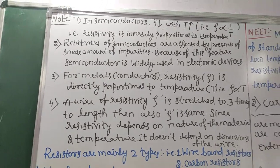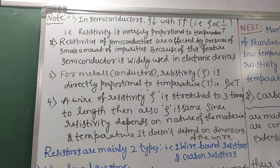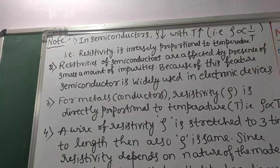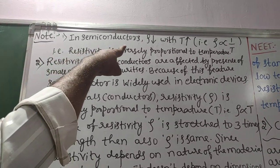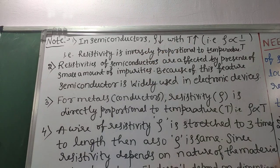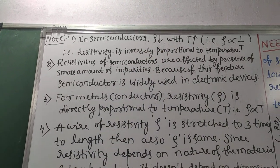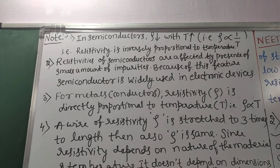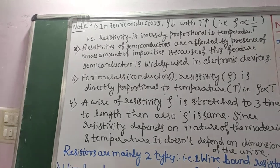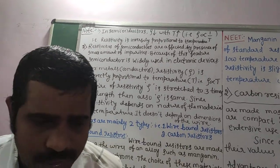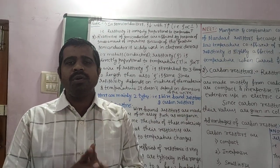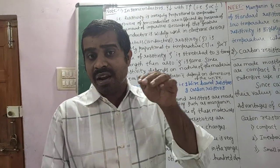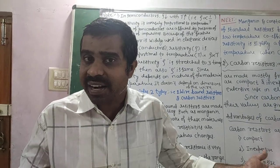First, a very important note point in semiconductors: resistivity decreases with increase in temperature. In semiconductors, resistivity and temperature are inversely proportional. As temperature increases, resistivity decreases and hence conductivity increases.